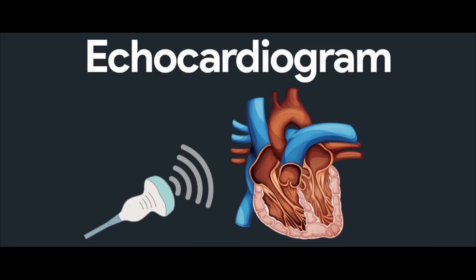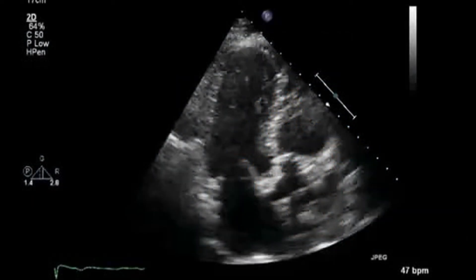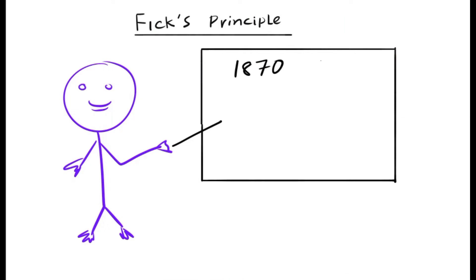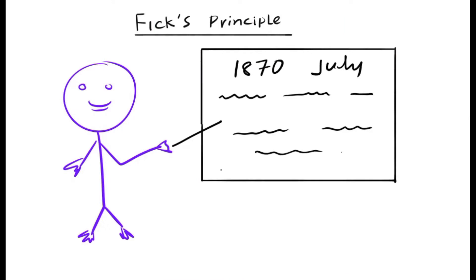The Fick principle to assess cardiac output is discussed in this video, which is a very basic methodology. Cardiac output can also be assessed using echocardiogram as an advanced technology. I would like to take you back to 1870, where Fick presented his research on cardiac output measurement at a conference in July 1870, and his proposal was coined as Fick's contribution for the measurement of cardiac output.